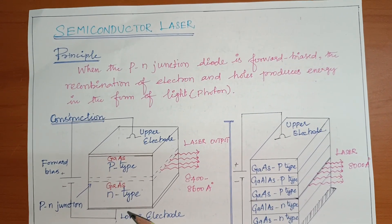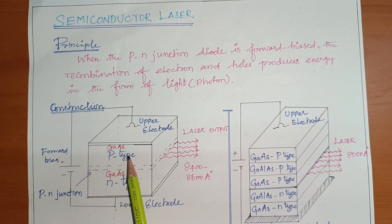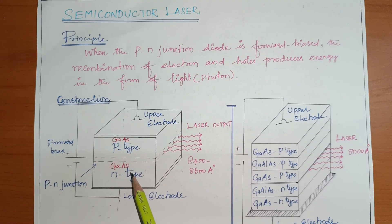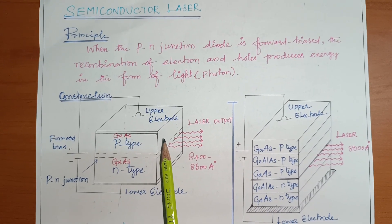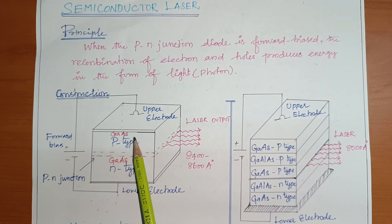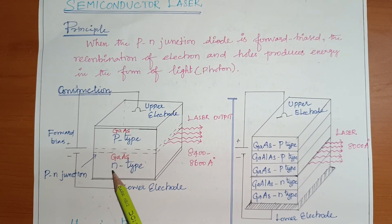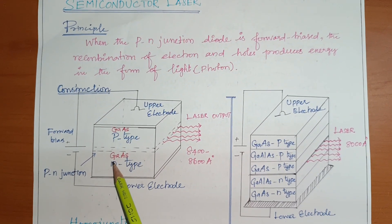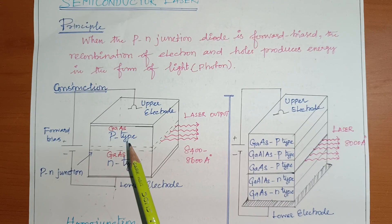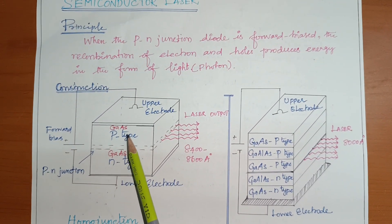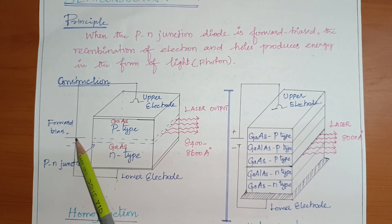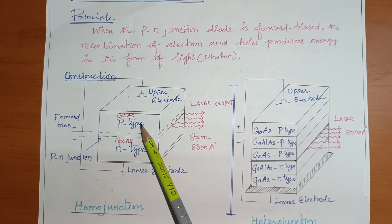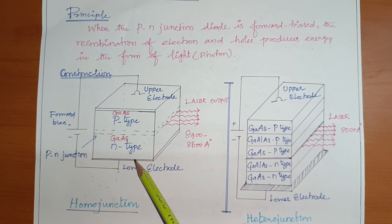For construction, we take two single crystal materials: gallium arsenide p-type and gallium arsenide n-type. Gallium arsenide p-type means gallium arsenide doped with germanium. Gallium arsenide n-type means tellurium is doped with gallium arsenide. The upper electrode is connected with the positive terminal and the lower electrode with the negative terminal, making this a forward biased semiconductor laser.